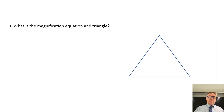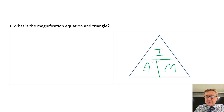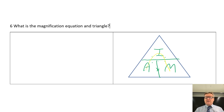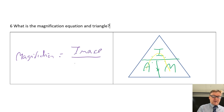Question number six: what is the magnification equation and triangle? The triangle is I over A times M - the AIM equation. M is magnification, and that equals image size divided by actual size.